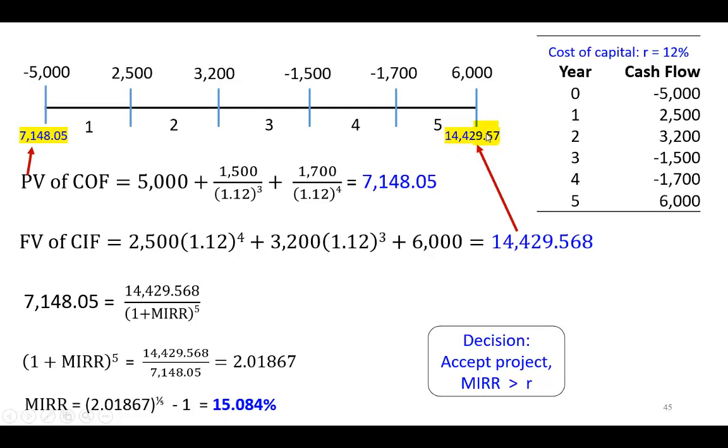So now the question is, with this as present value, with this as terminal value, future value, occurring five years from now, what is the rate that will cause this to be equal to this? We solve it algebraically to get 15.08%. This is our modified internal rate of return, doing this manually. And because this is greater than the cost of capital of 12%, we should accept the project.